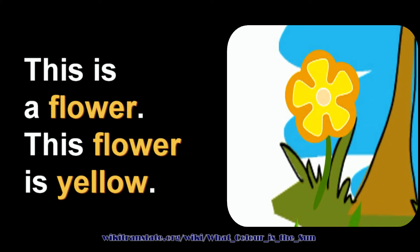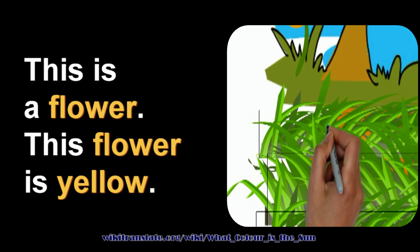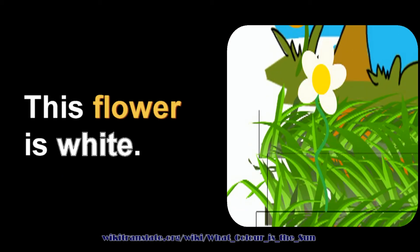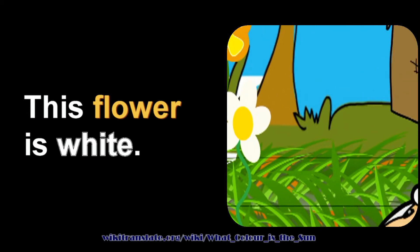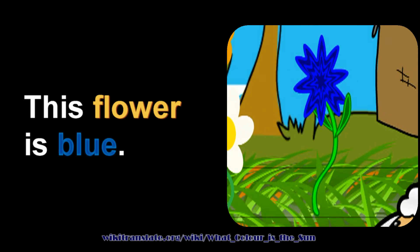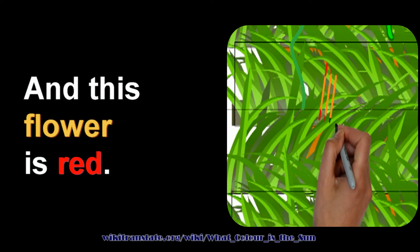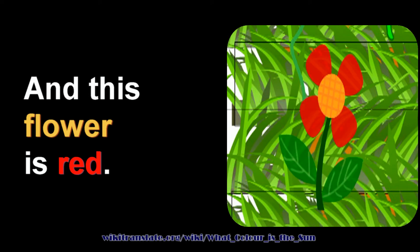This is a flower. This flower is yellow. This flower is white. This flower is blue. And this flower is red.